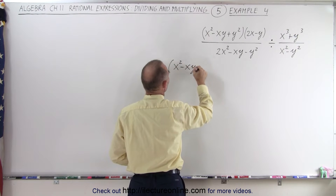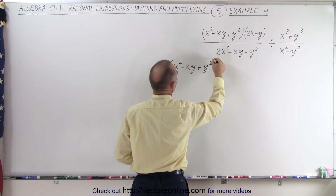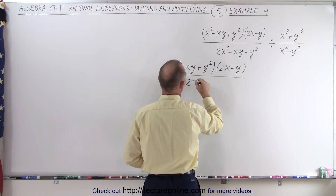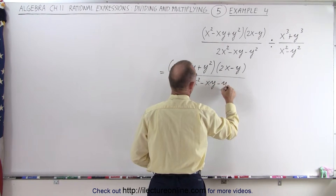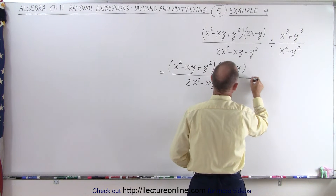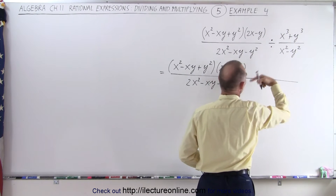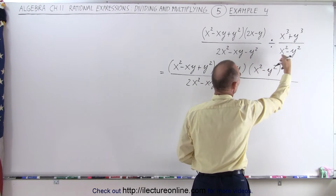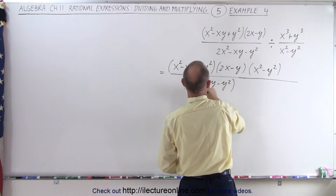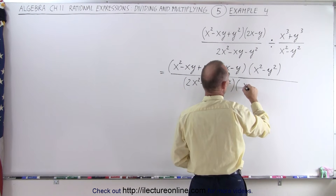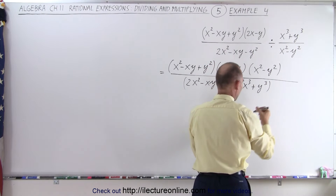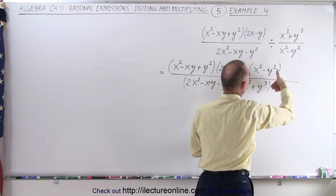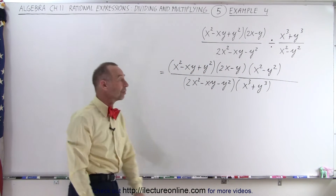We have x squared minus xy plus y squared, times 2x minus y, divided by 2x squared minus xy minus y squared. We continue this and write it as a multiplication of its inverse, so this becomes x squared minus y squared in the numerator, and x cubed plus y cubed in the denominator. All I did was turn it into multiplication — flip it upside down, take the inverse — and write it all as a single numerator and a single denominator.